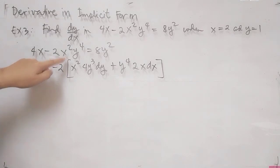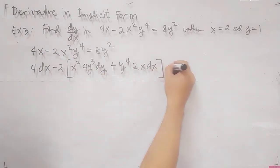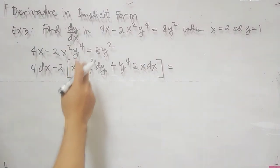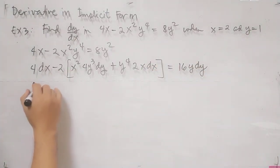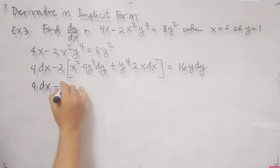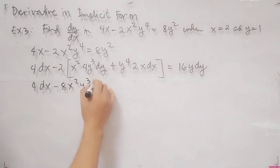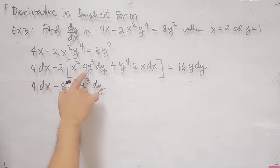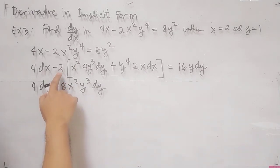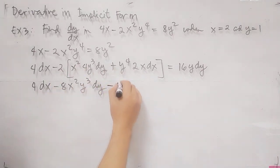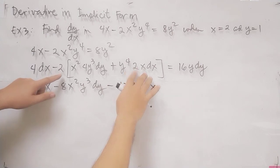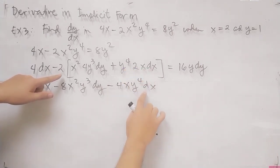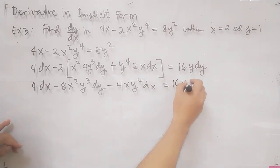Taking the derivative: 4 dx minus 2 times — using product rule — x squared times the derivative of y to the 4th, which is 4y cubed dy, plus y to the 4th times the derivative of x squared, which is 2x dx, equals the derivative of 8y squared, which is 16y dy. Distributing: 4 dx minus 8x squared y cubed dy minus 4xy to the 4th dx equals 16y dy.